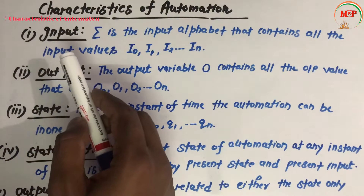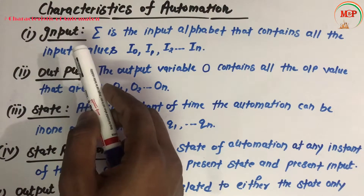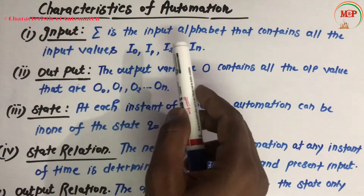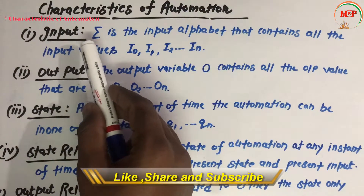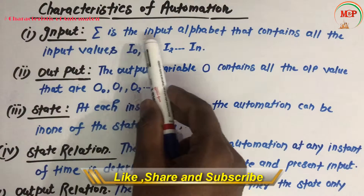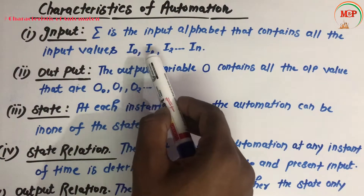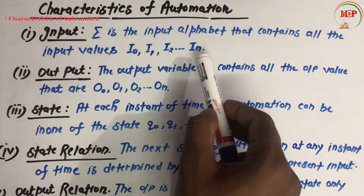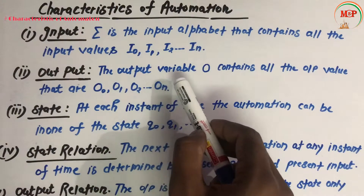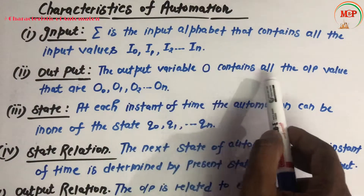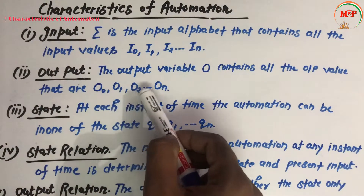In this video we are going to study about the topic characteristics of automation. The first point is input, represented by Sigma (Σ), which is the input alphabet that contains all the input values: I0, I1, I2 till In. The second point is output, represented by O, and the output variable O contains all the output values: O0, O1, O2 till On.